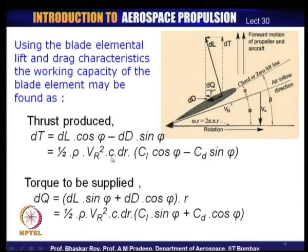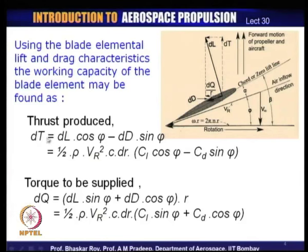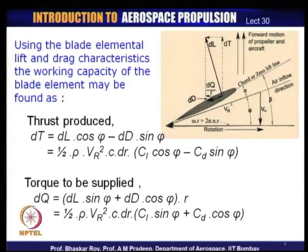If you want to have the thrust created by each section of the same order, you would have to manipulate the lifting capacity, the drag penalty, the resultant velocity, and the chord dimension to keep dT constant from root to tip — though quite often that may not always be possible. So the actual elemental thrust produced by each section could vary from root to tip. The torque to be supplied must be matched by the engine.